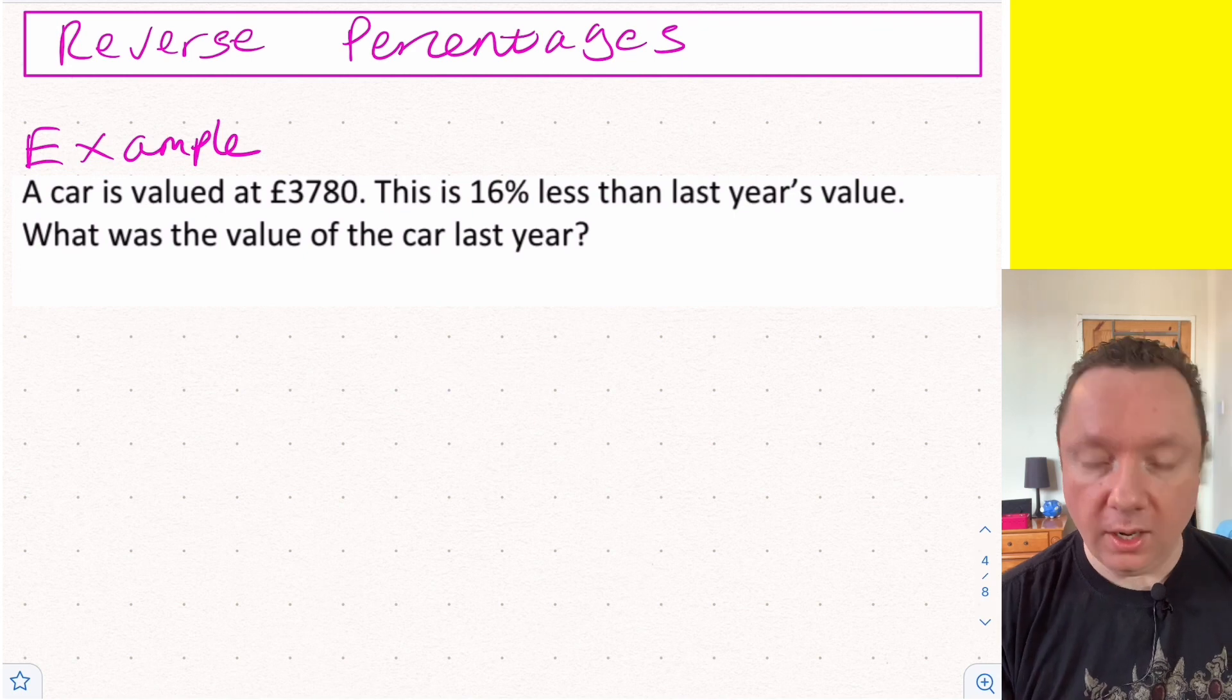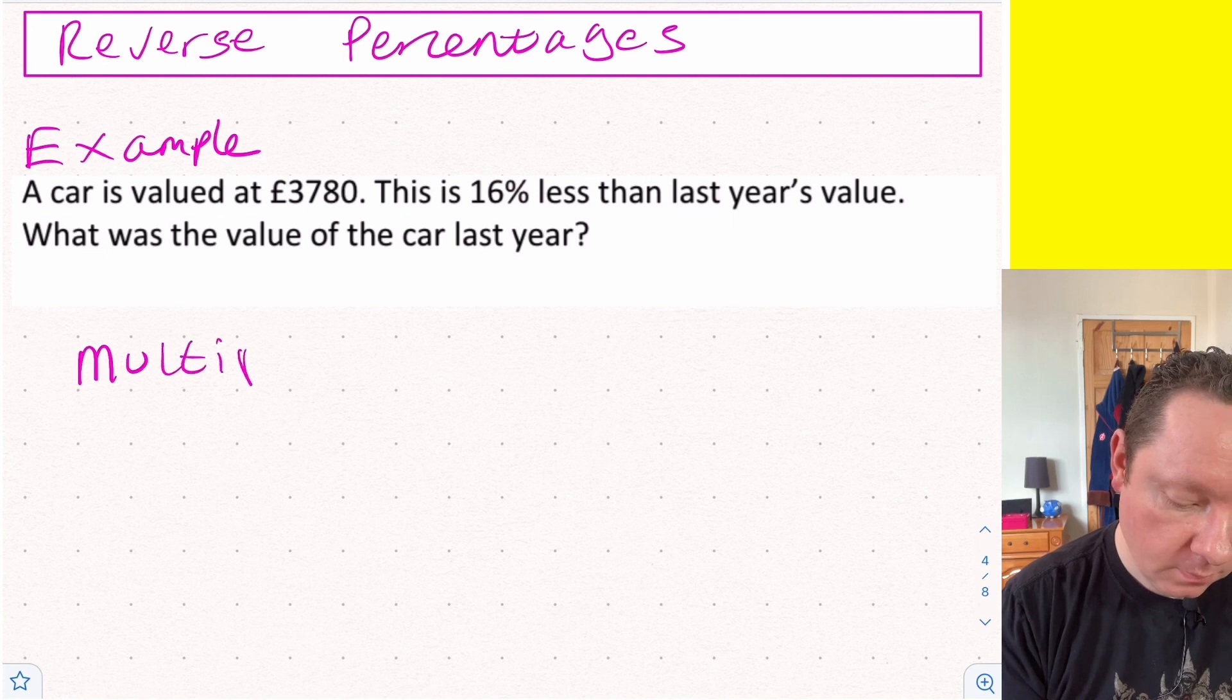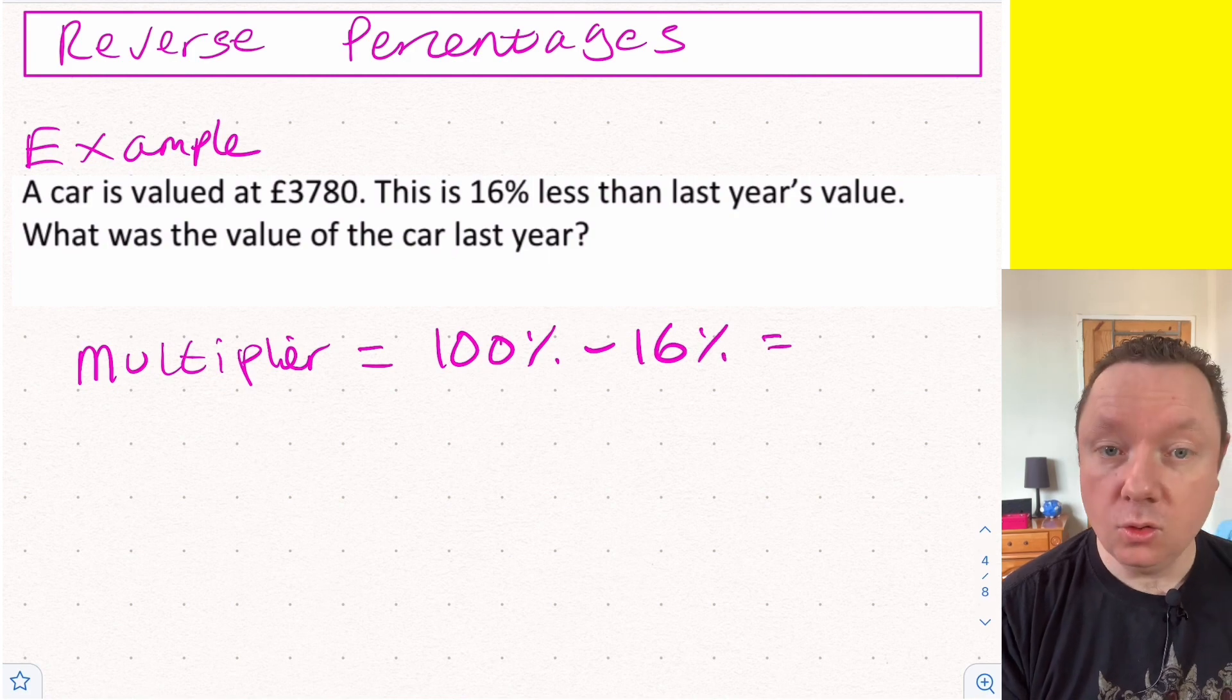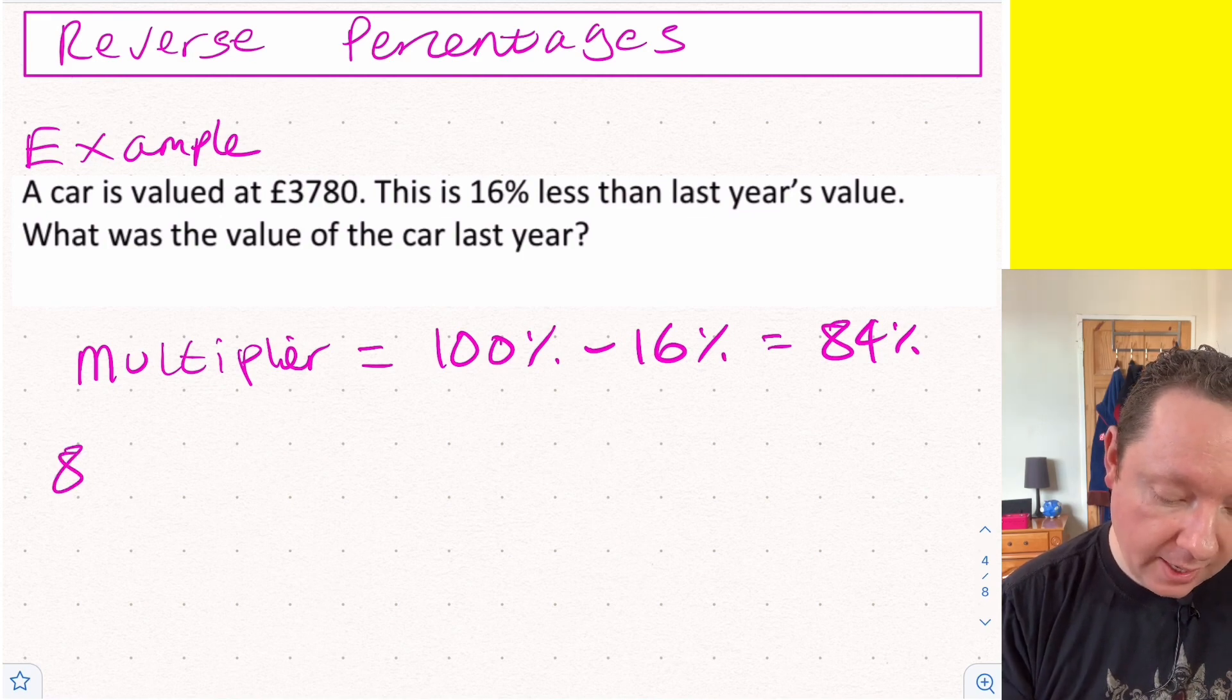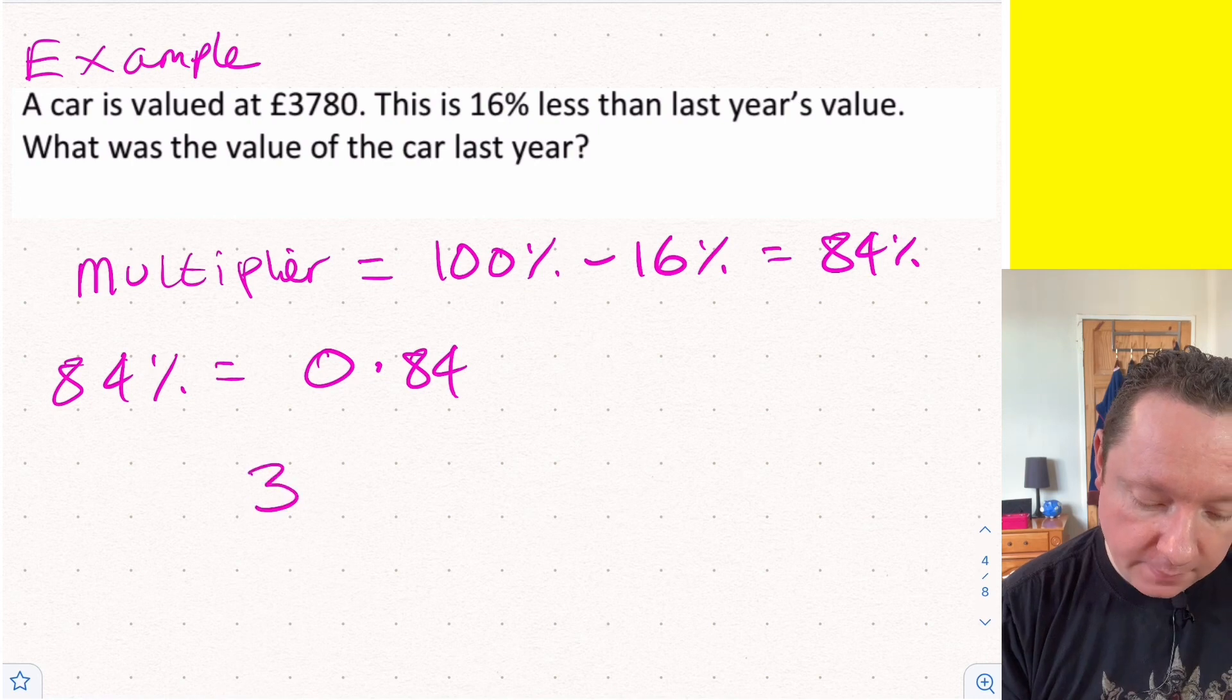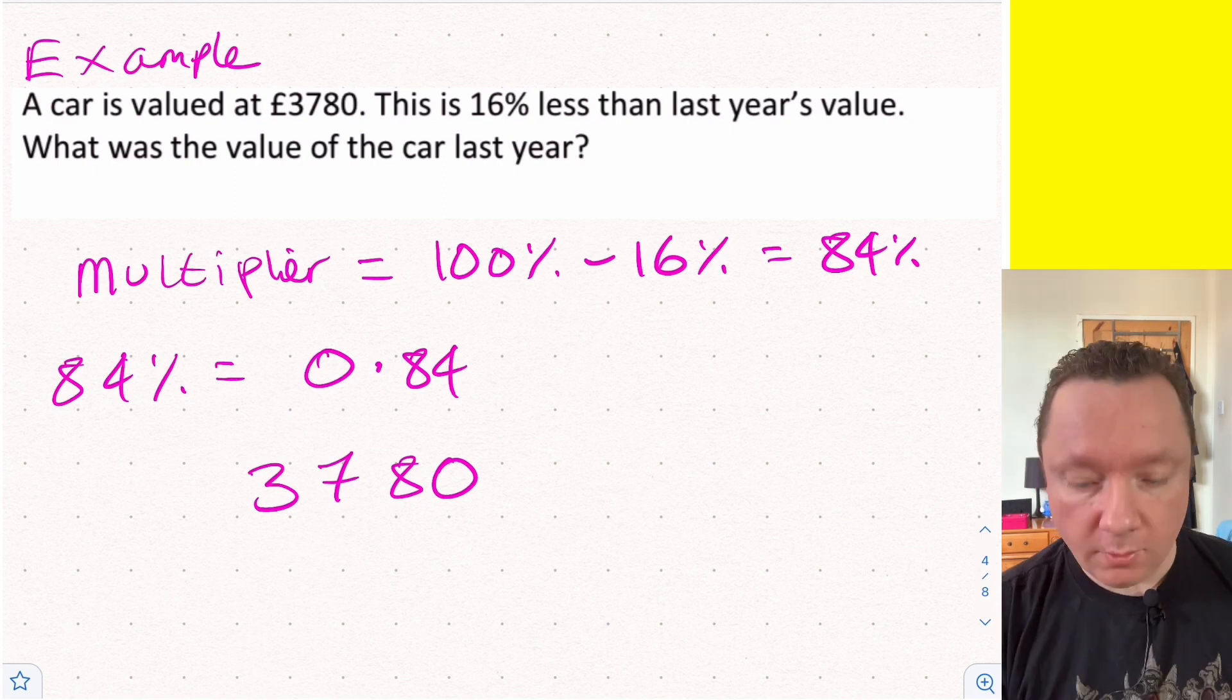Let's see it with an example. A car is valued at £3780 and this is 16% less than last year's value. What is the value of the car last year? Start off in the same way - multiplier. 100% minus 16% (16% less, it went down) gives me 84%. So if we turn that to a decimal we get 0.84. To find out the answer to the problem we take 3780, but instead of timesing, we divide by the multiplier.